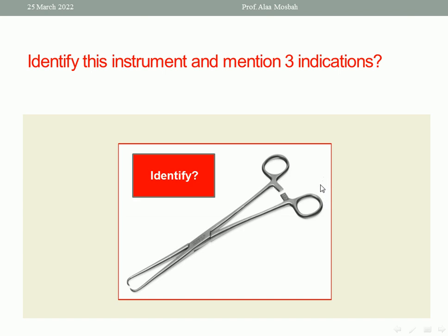Identify this instrument and mention three indications. This instrument is a tenaculum, or single-toothed vulsellum. This single-toothed vulsellum is used to do traction on the anterior lip of the cervix during dilatation of the cervix using Hegar dilators, during insertion of an IUD, during performing hysterosalpingogram, during performing dilatation and curettage, and in many gynecologic surgeries.